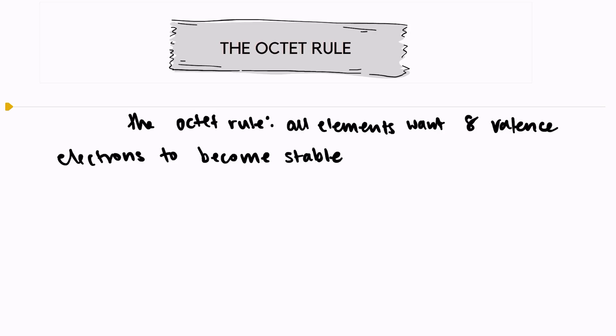The octet rule says that all elements want to have eight valence electrons to become stable. This means that they're going to have a completely filled upper energy level and thus become stable.